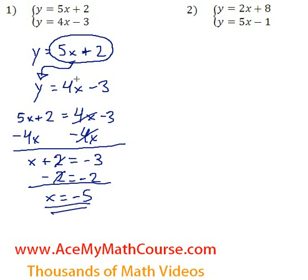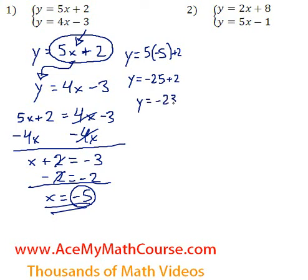Now, how do we solve for y? I can just plug the x value back into the equation. So y is equal to 5 times negative 5 plus 2. So 5 times negative 5, negative 25, plus 2, negative 23.